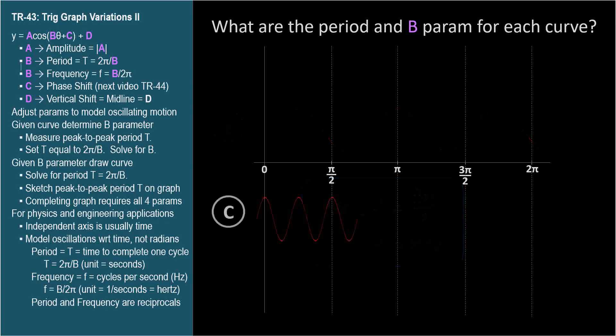For curve c, peak to peak is pi over 4. It looks like half of pi over 2. Period equals 2 pi over b. So set these equal and solve for b. The b parameter is 8. So when the period is pi over 4, the b parameter is 8.